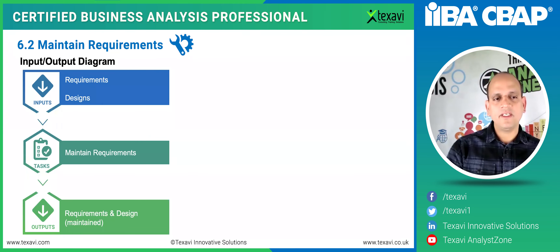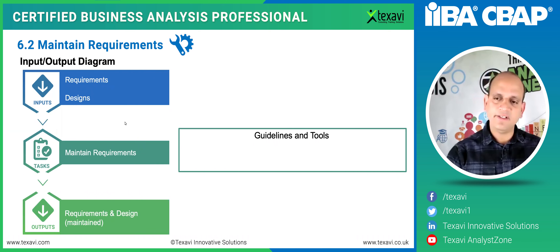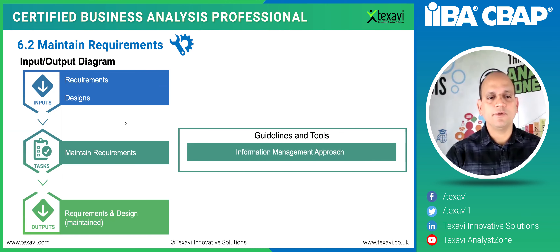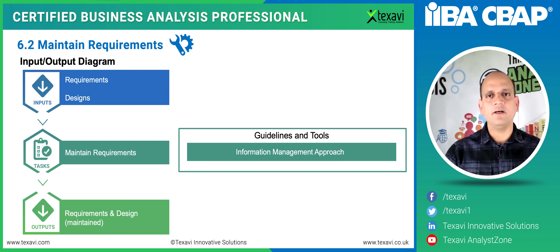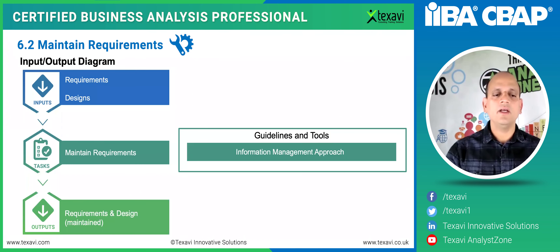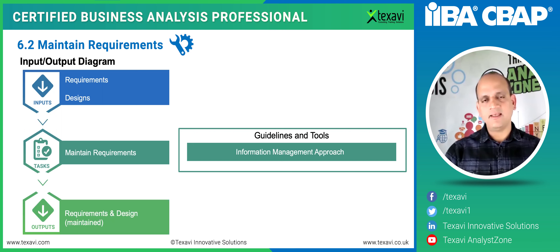In terms of the maintenance of requirements, the input/output diagram shows requirements and design coming in as inputs. Within this activity, you have the information management approach, because requirements maintenance is all about communication — ensuring we have the correct information in the correct place to the correct level of detail. Once we manage requirements better and maintain them properly, we can accommodate any changes, and the output from this process is the maintained requirements.